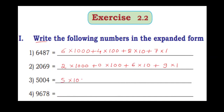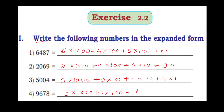5,004: 5 into 1000 plus 0 into 100 plus 0 into 10 plus 4 into 1. 9,678: 9 into 1000 plus 6 into 100 plus 7 into 10 plus 8 into 1.